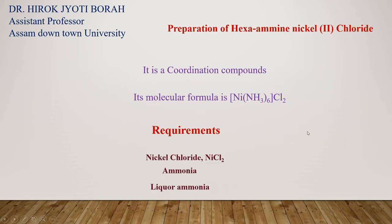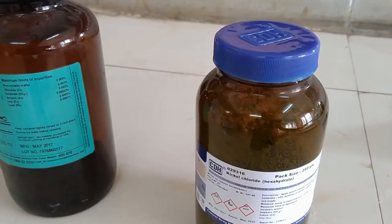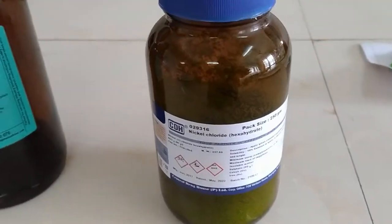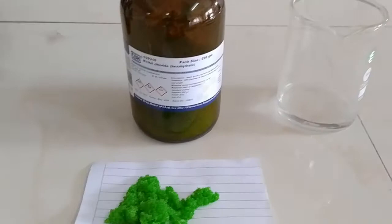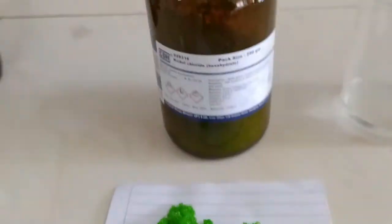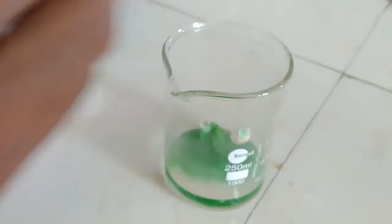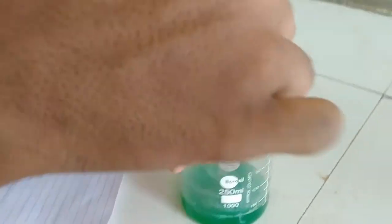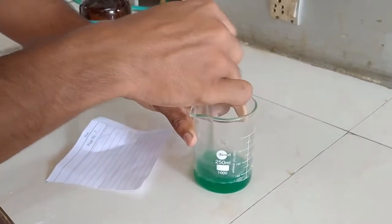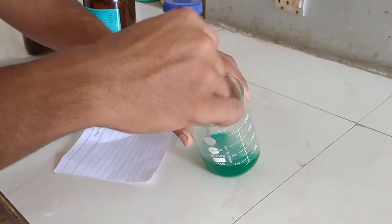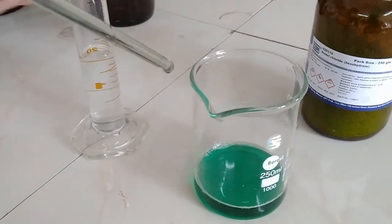Now let's go to the preparation process of hexamine nickel(II) chloride. For preparation, we need nickel chloride, liquor ammonia, and ammonia solution. At first, we take approximately 12 grams of nickel chloride dissolved in 20 ml of warm water. Then we add 24 ml of ammonia.